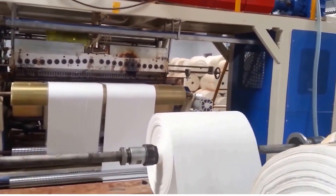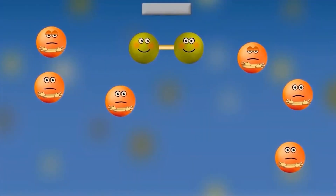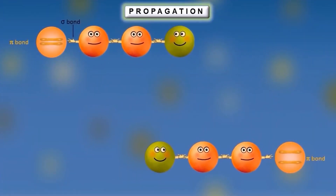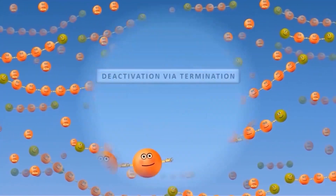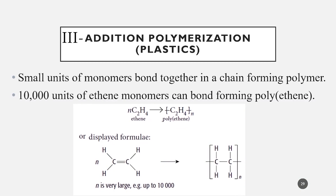Moving to addition polymerization, which is used in the formation of plastics. Small units called monomers are linked together in a chain to form polymers. For example, 10,000 ethene monomers bond together to form a polymer chain of polyethene, which is used in plastic bags. The double bond breaks and multiple monomers are linked together. As a result, the starting materials are unsaturated monomers, but the product is a stable saturated polymer.